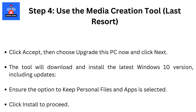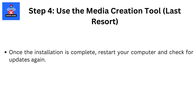The tool will download and install the latest Windows 10 version, including updates. Ensure the option to keep personal files and apps is selected. Click Install to proceed. Once the installation is complete, restart your computer and check for updates again.